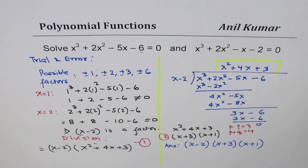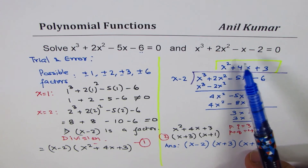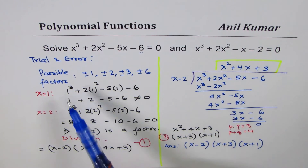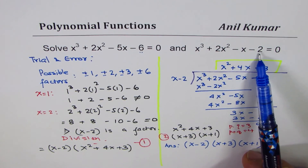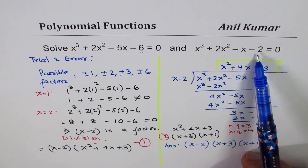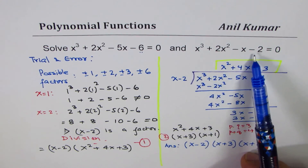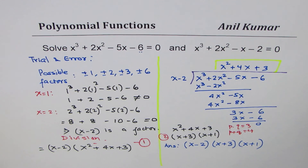The second equation x³ + 2x² - x - 2 = 0 is for you to practice. Check possible factors: ±1 and ±2 — just four values to try. If you try those values you'll get all the factors. Feel free to subscribe, share, and like the videos. Thank you and all the best.